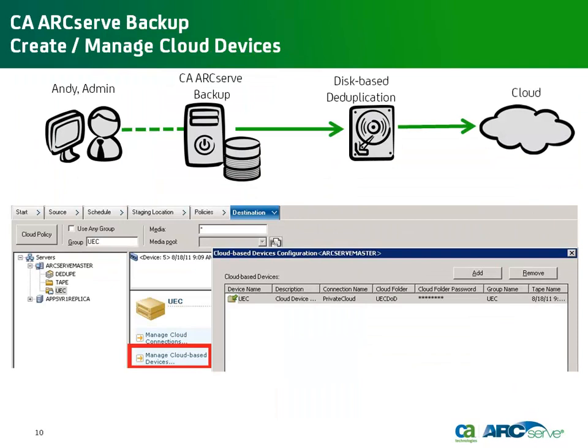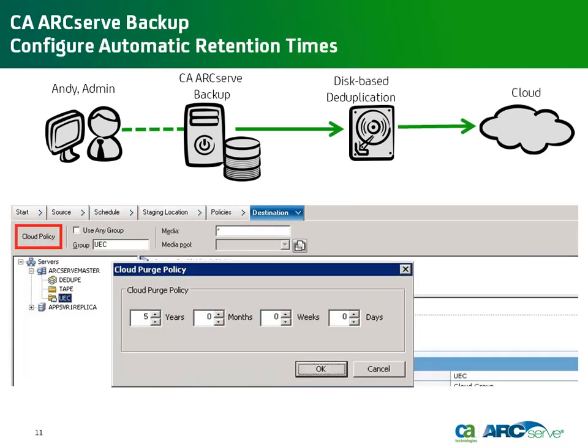Your cloud storage vendor will provide all necessary information. Once he has the connection set up, Andy creates the device by clicking on the Manage Cloud-based Devices. When configuring backups, he can now choose a cloud device as the final destination. Clicking Cloud Policy allows him to determine the length of time he would like the backup data archived before purging, in years, months, weeks, or days.